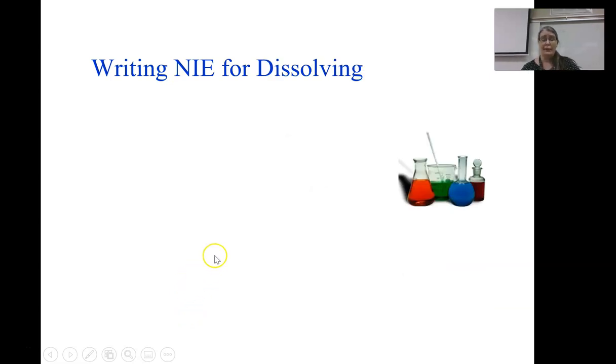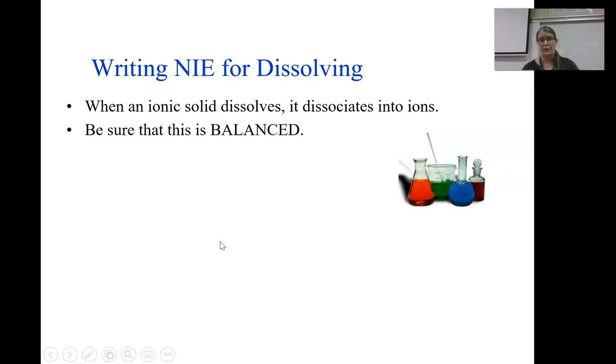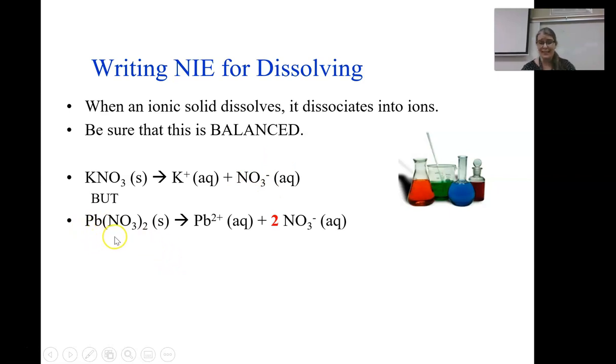The other thing that we will do a great deal coming up in solubility equilibrium is writing the equation for dissolving. And the big thing to think about here is that this has to be balanced. I take my ionic solid and I break it up into its separate ions. For example, this very soluble potassium nitrate compound breaks up into one potassium and one nitrate. But something like lead nitrate, which is absolutely soluble because of that nitrate ion, breaks up into a Pb2+, but it has two nitrate ions. They do not stay together. They are two separate dissociated ions.